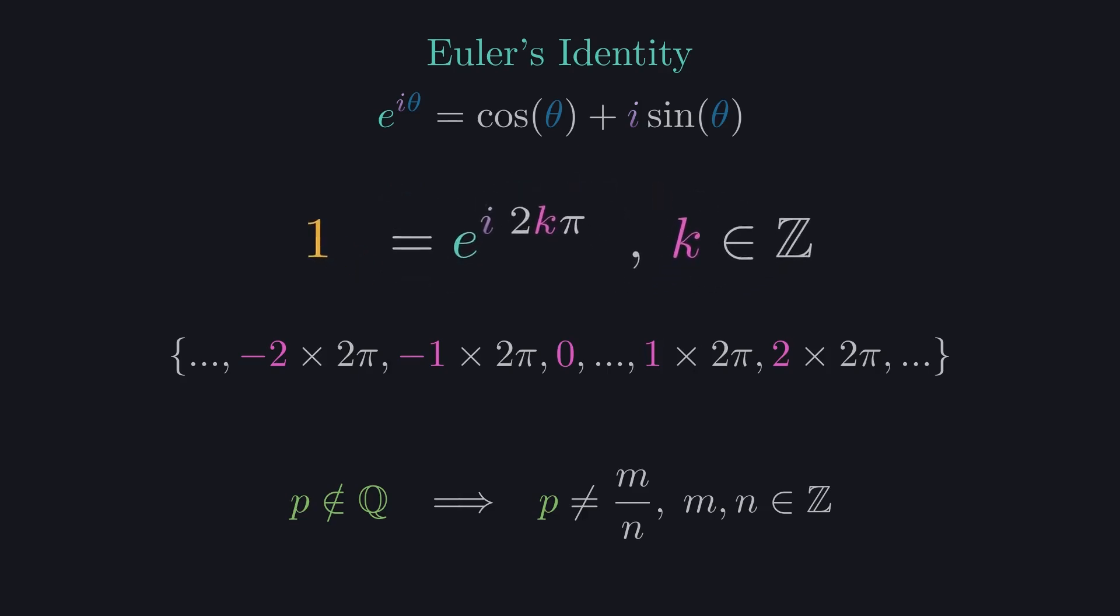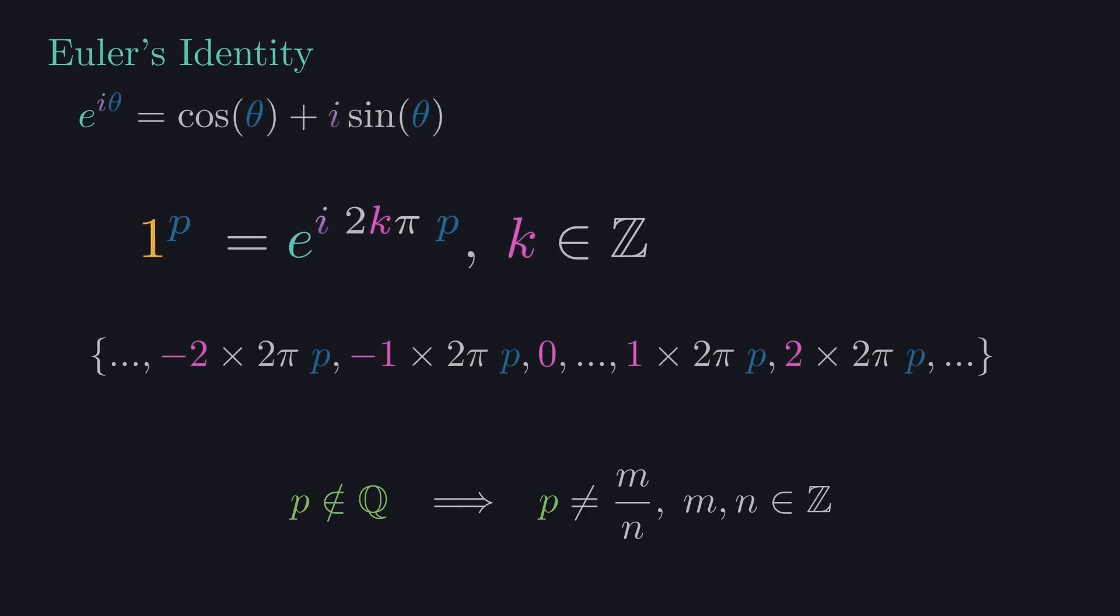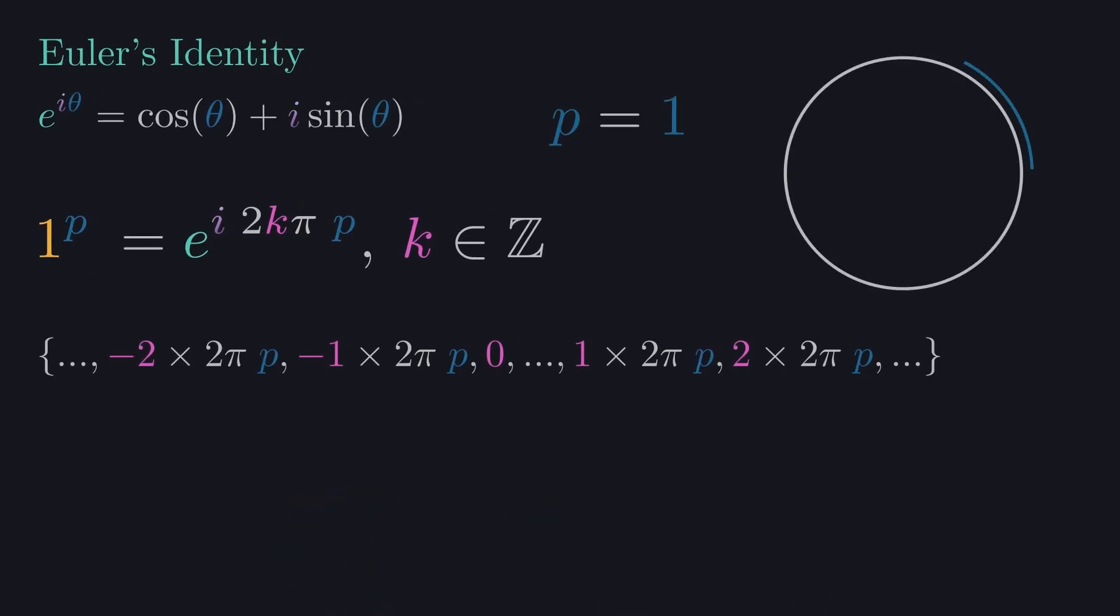Now, if we raise that 1 to any power p, the power p joins this multiplier and determines the pace of these infinite steps. For a power of 1, that means we go all the way around the circle once for every k.